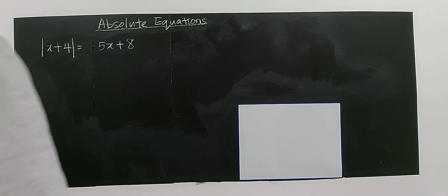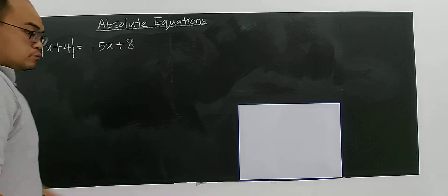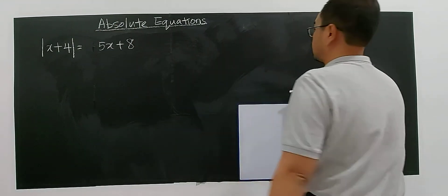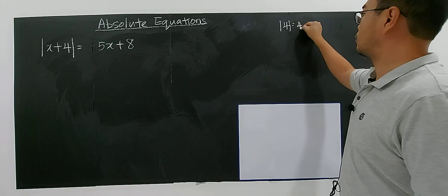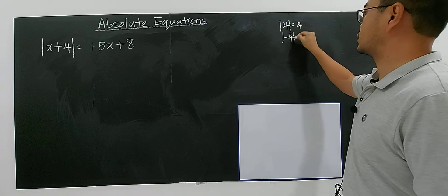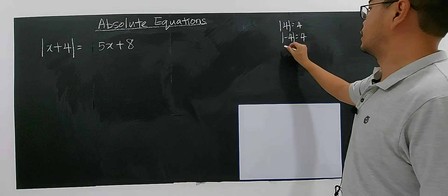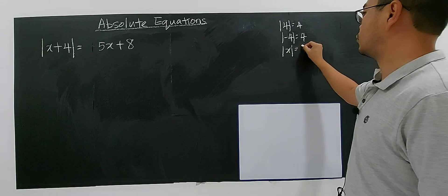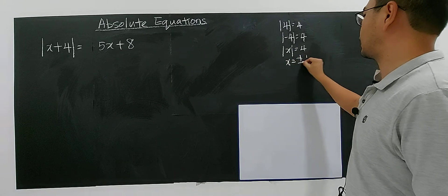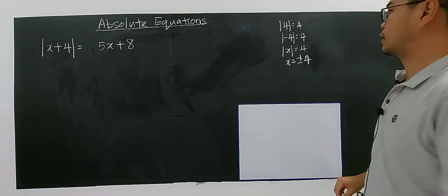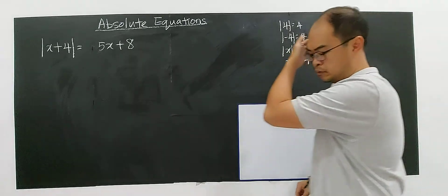Let's look at this absolute equation. It's the same concept here. So modulus of 4, you will get 4. Modulus of negative 4, you will still get 4. So I can say that modulus of x equals 4, the result will be x equals to positive or negative 4. It will be positive, it will be negative to get a 4.